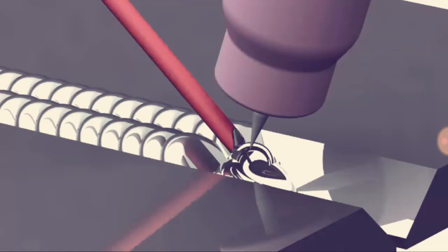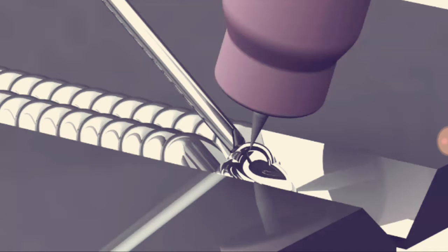Now, you can TIG weld with or without filler metal, and that's not a choice you have in a lot of other processes. If you want to add filler metal to a TIG weld, use a filler rod, which is just a rod of metal with a specific alloy. You want to make sure that the filler metal you're using is compatible with the base metal, and that it has the strength required to do the job.